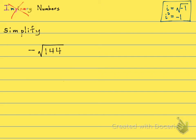However, I will simplify it. Drop down the negative. What is the square root of 144? 12. The answer is negative 12. No i on this one — it's not imaginary.